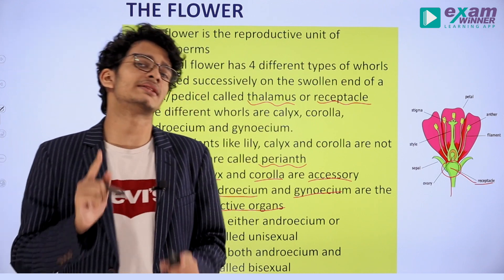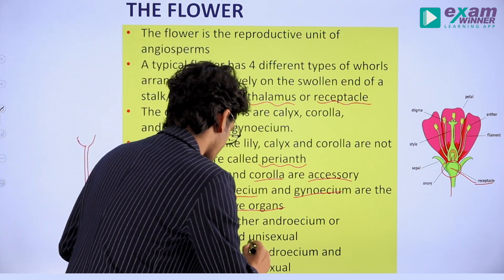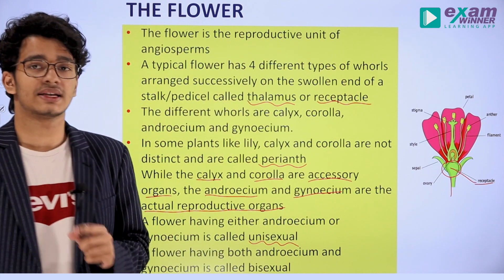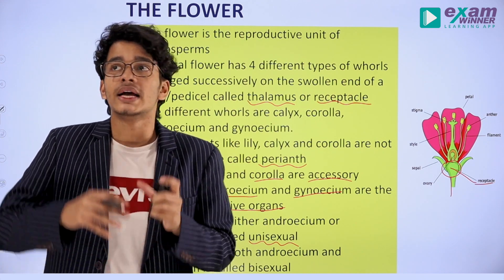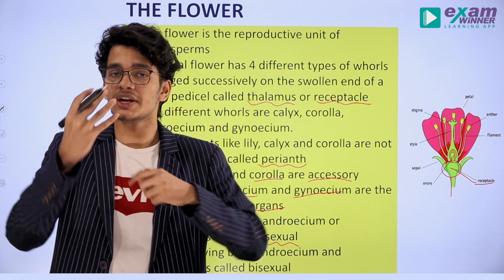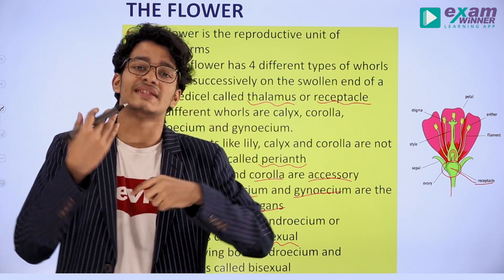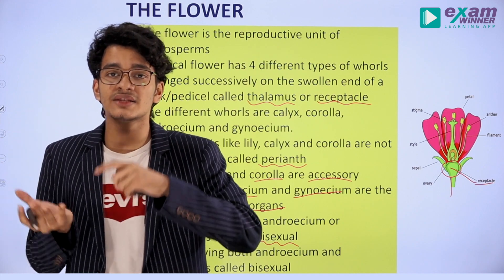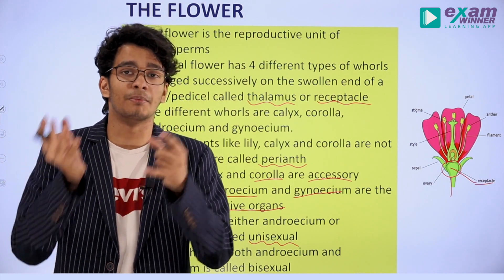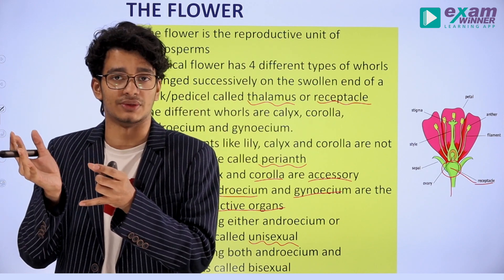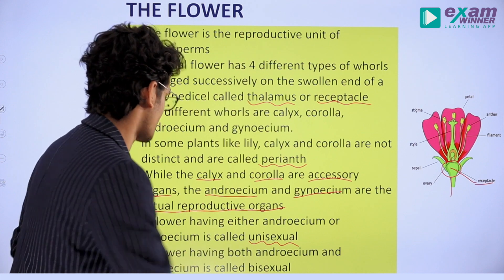Some plants have been called unisexual plants because there is only one sex — one is a female plant and one is a male plant. Other plants, if they have a flower with both a pistil and a stamen, have both the Androecium and Gynoecium — both male and female sex. The name for that type of flower is bisexual.